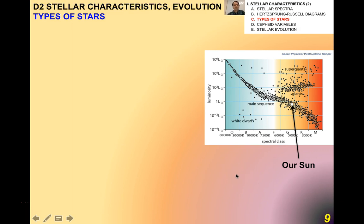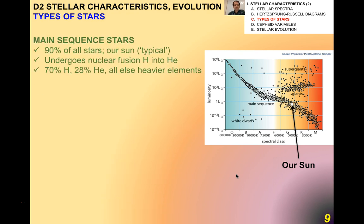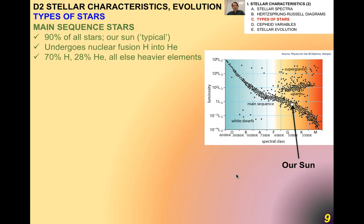Okay, physics students, welcome to the second video in topic D2, Stellar Characteristics and Evolution. In this video, I'm going to talk about types of stars and especially Cepheid variables, which are very important for you guys. Let me get a little bit deeper into the types of stars that are depicted in the Hertzsprung-Russell diagram.